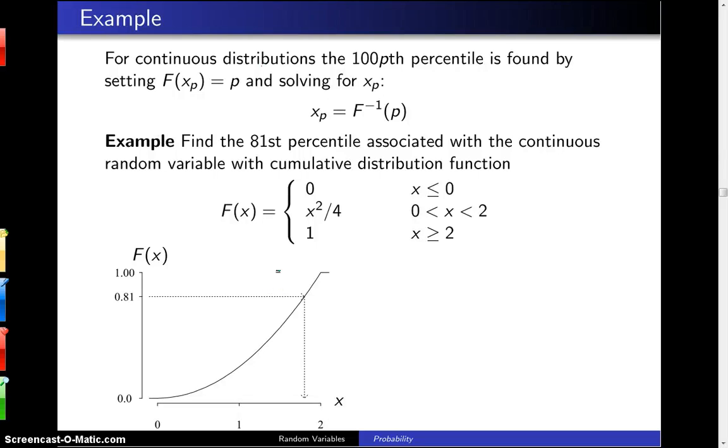The previous example involving percentiles concerned finding the percentile of a discrete random variable. In this example we're going to find the percentile associated with a continuous random variable.